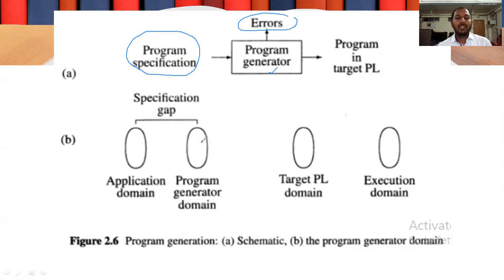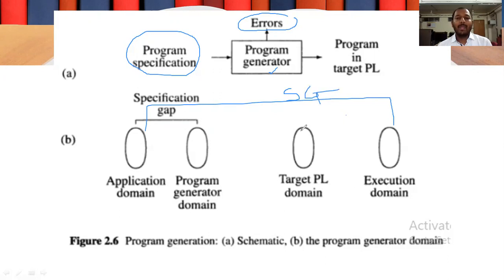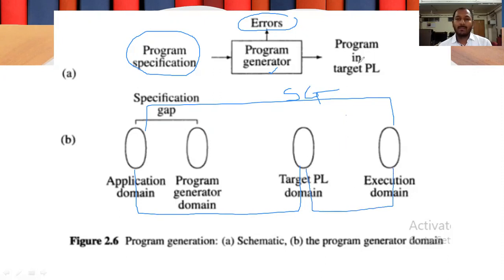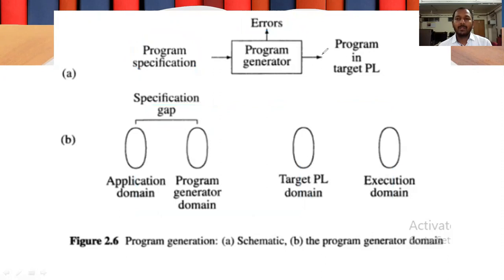We have seen that if there is an understanding difference between the application domain and execution domain, we call this a semantic gap. We then introduced a new domain, the target PL domain. The difference between application and PL domain is called a specification gap, and the difference between target PL language and execution domain is called an execution gap. Here we have introduced one more domain named the program generator domain.